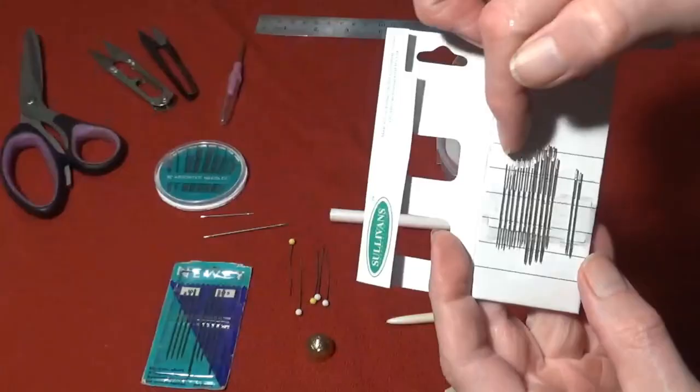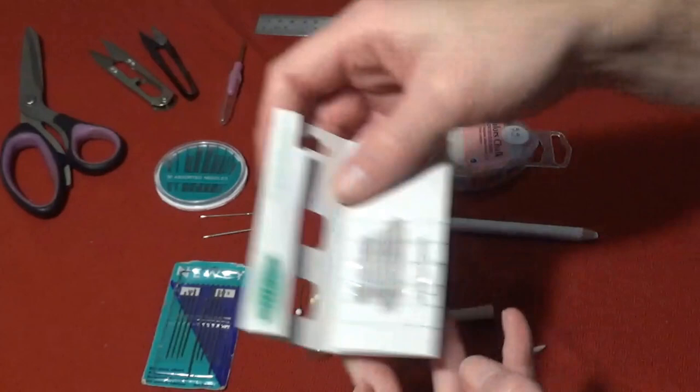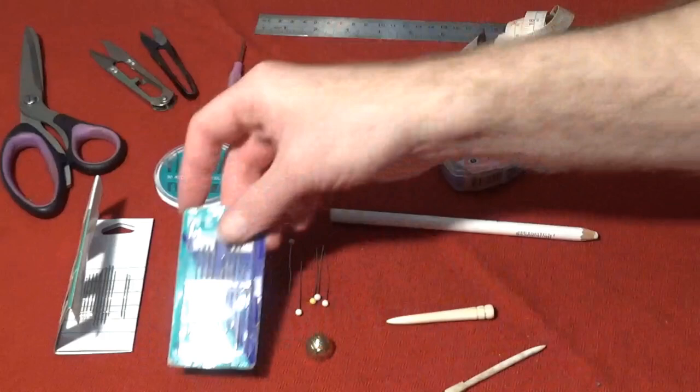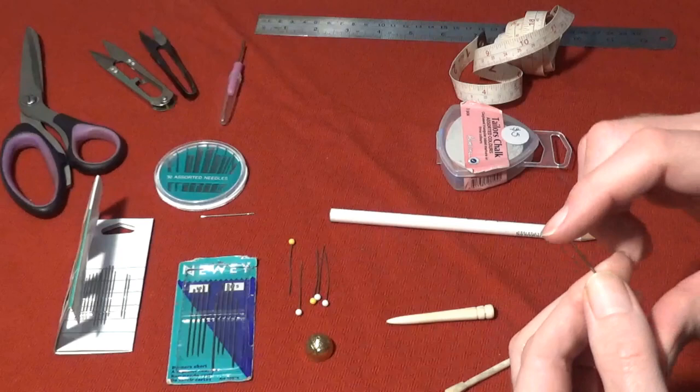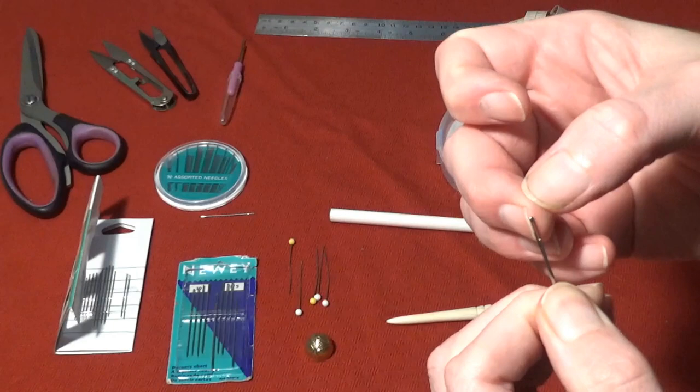Speaking of sewing needles, let's have a look at those. Not all needles are the same. They come in a variety of sizes for a variety of jobs. Larger needles are suitable for certain jobs. As you can see, this large needle has a large hole, which is helpful when using thicker threads such as linen cord and wool.